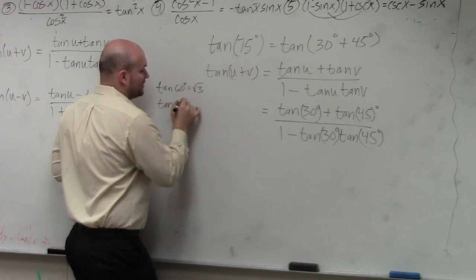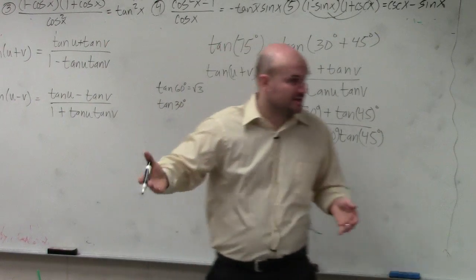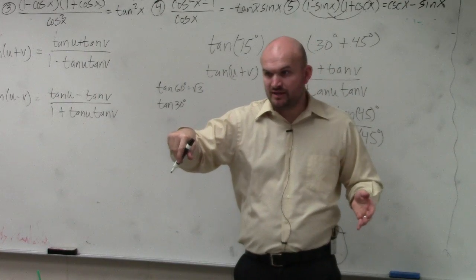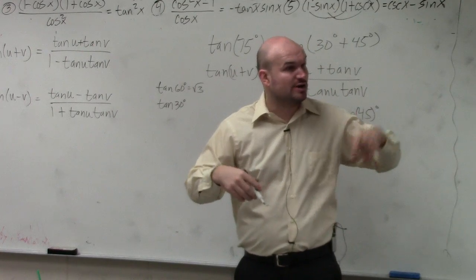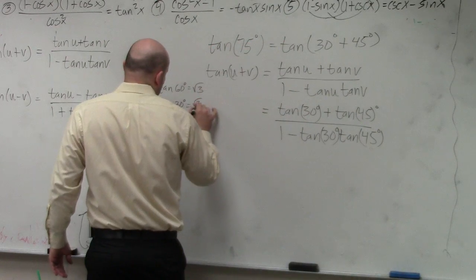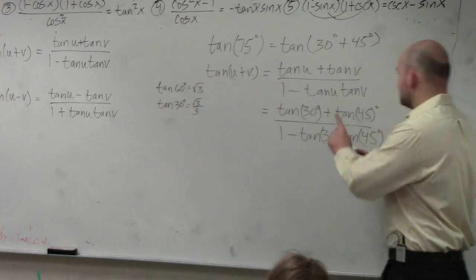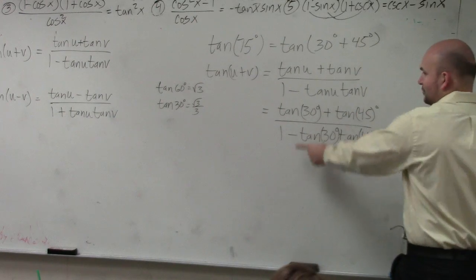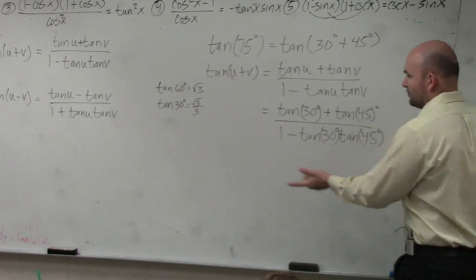So therefore, the tangent of 30 degrees, which was also a problem on that quiz that I gave you beginning of the class period, that one was square root of 3 over 3, correct? So you guys are going to need to remember those. Because a lot of times, I'm going to be asking you what the tangent of 30 degrees, tangent of 60 degrees, tangent of 45 degrees.